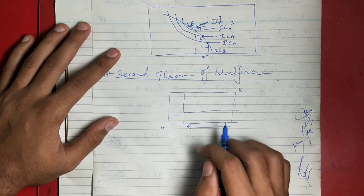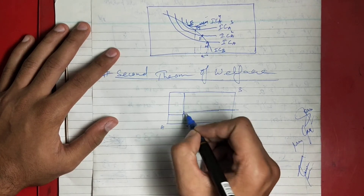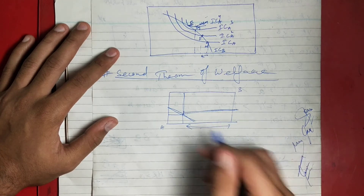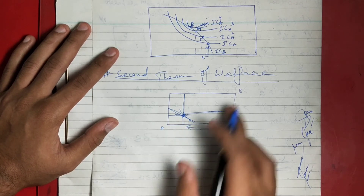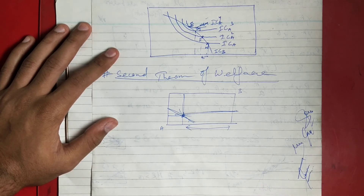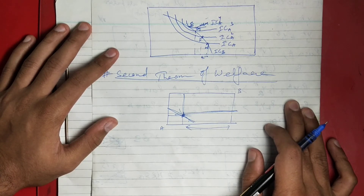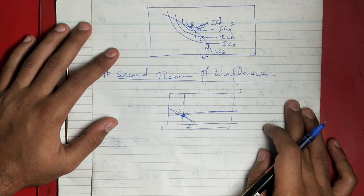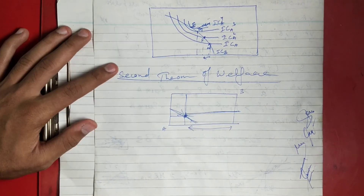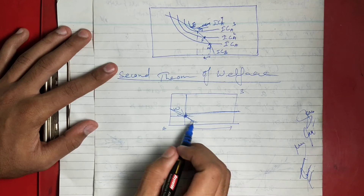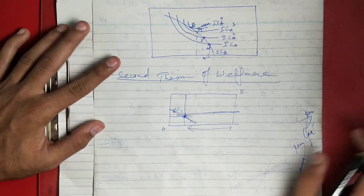The government sees this is not a good allocation from the social point of view. From the equilibrium and Pareto efficient standpoint you may get a solution, but in that solution A is getting very little compared to B. So the government considers this an inappropriate allocation and decides to intervene. The budget line always passes through the initial endowment, but the government sees this as unfair.